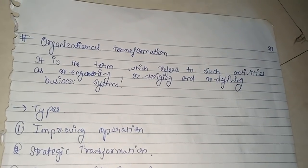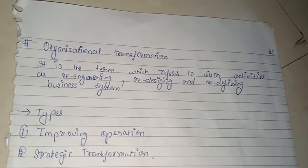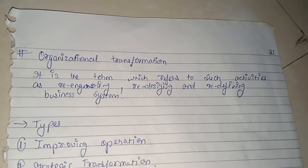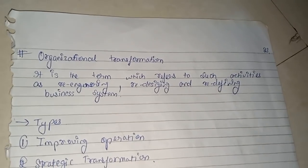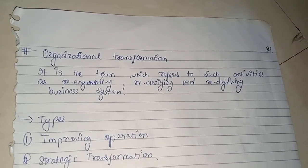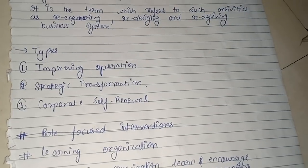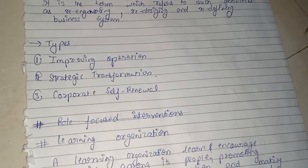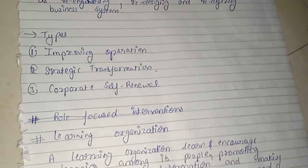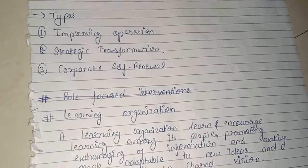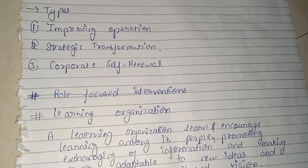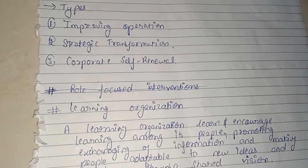The next concept refers to such activities as re-engineering, redesigning, and redefining business systems — transforming old systems into new ones. This involves improving operations strategically. If we add another product or product line, it involves corporate self-renewal — changing the corporate sector and the organization as a whole.